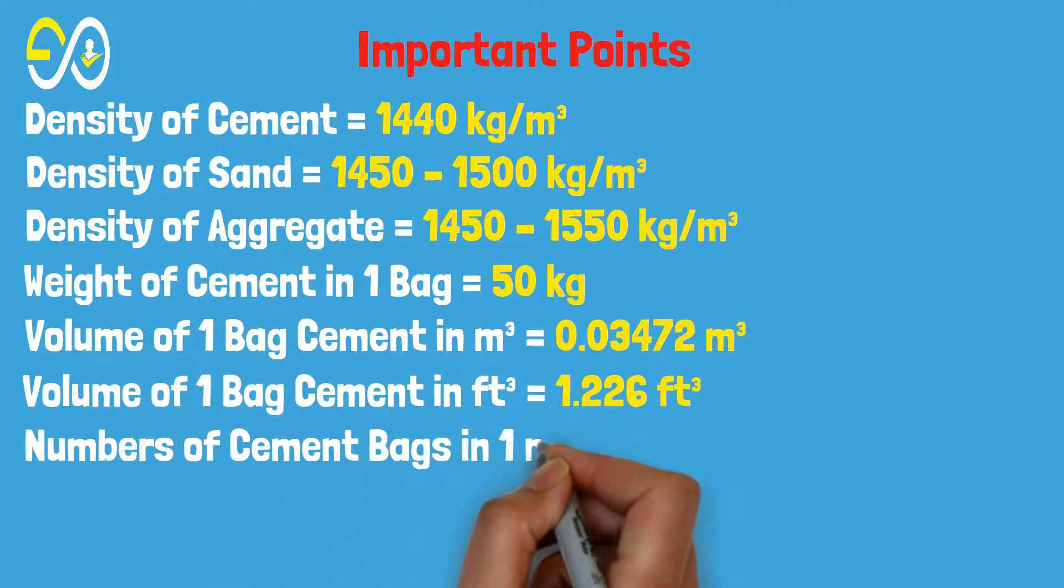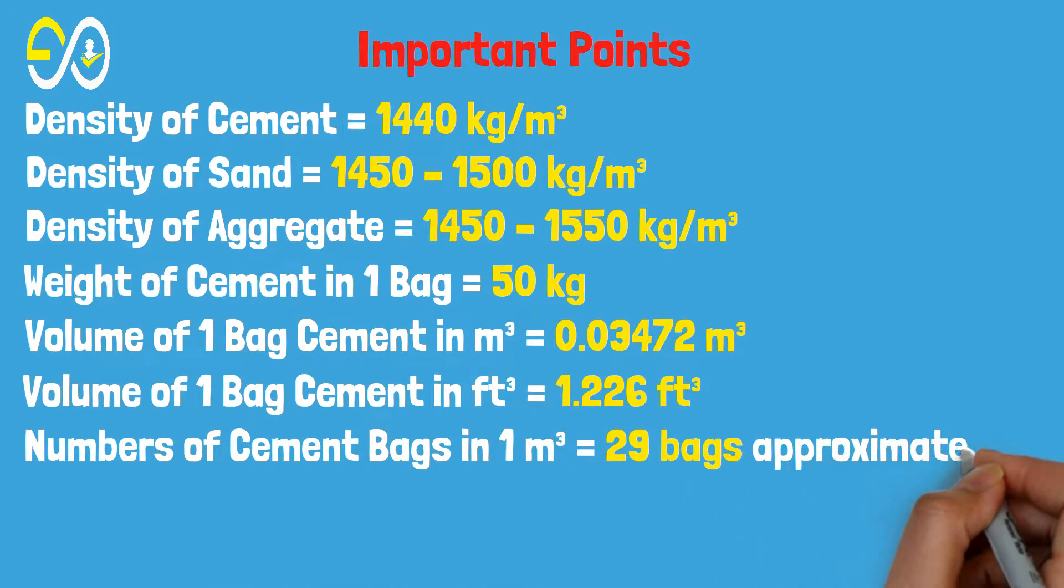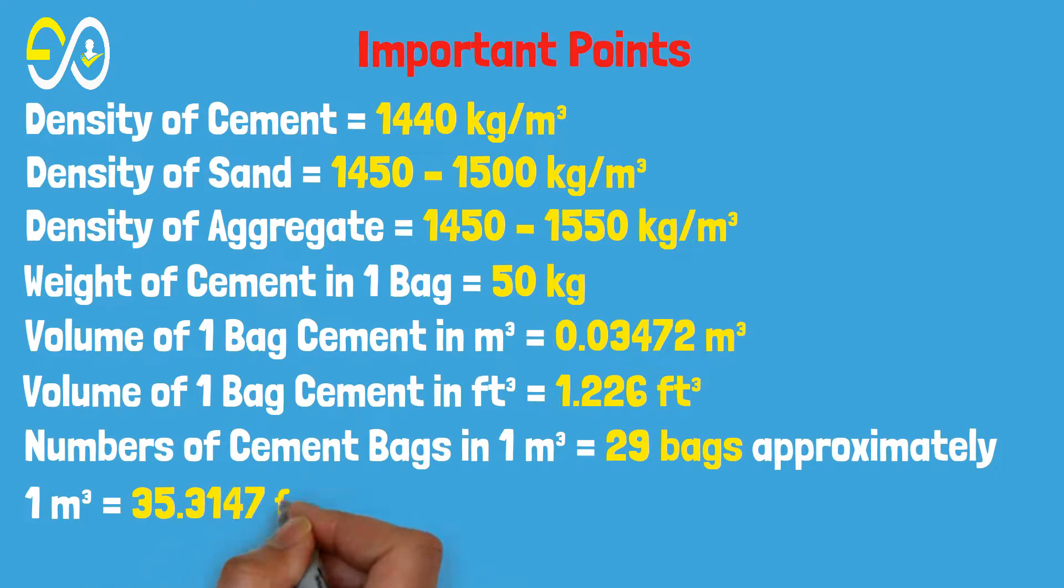Number of cement bags in one cubic meter equals 29 bags approximately. One cubic meter equals 35.3147 cubic feet.